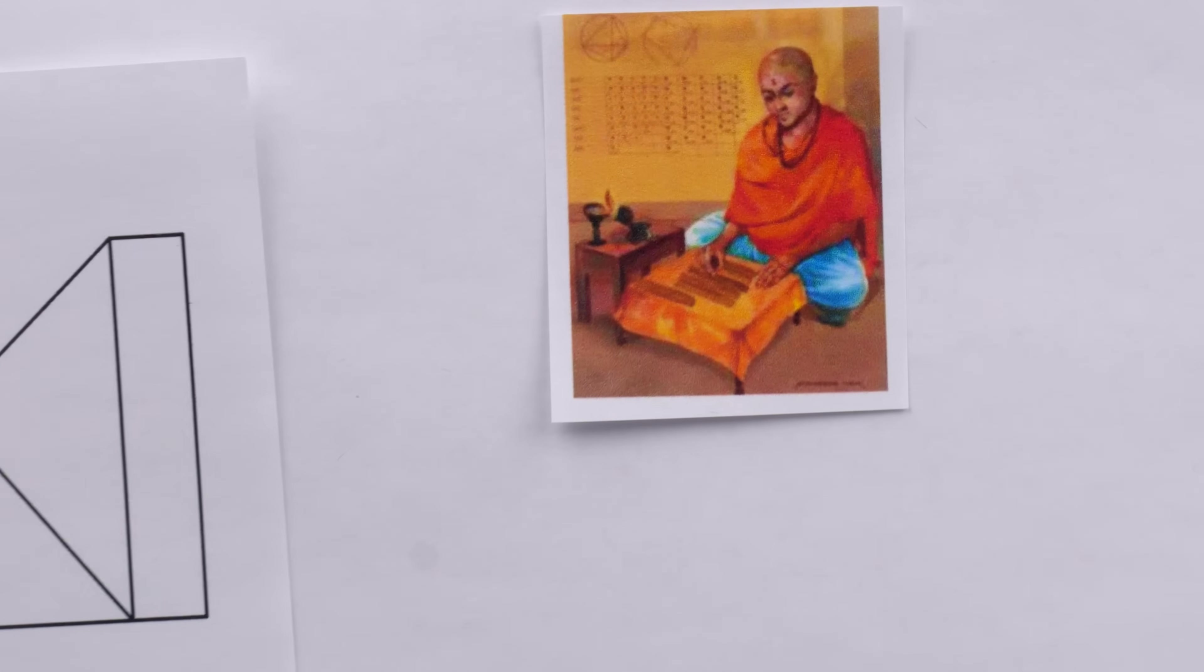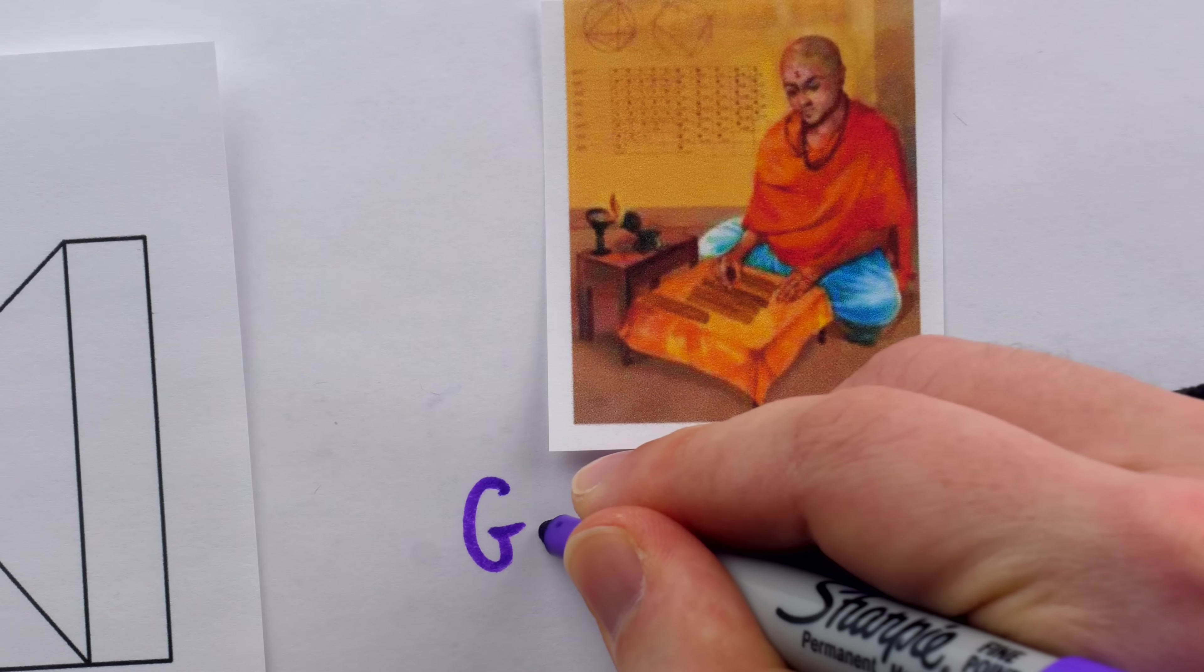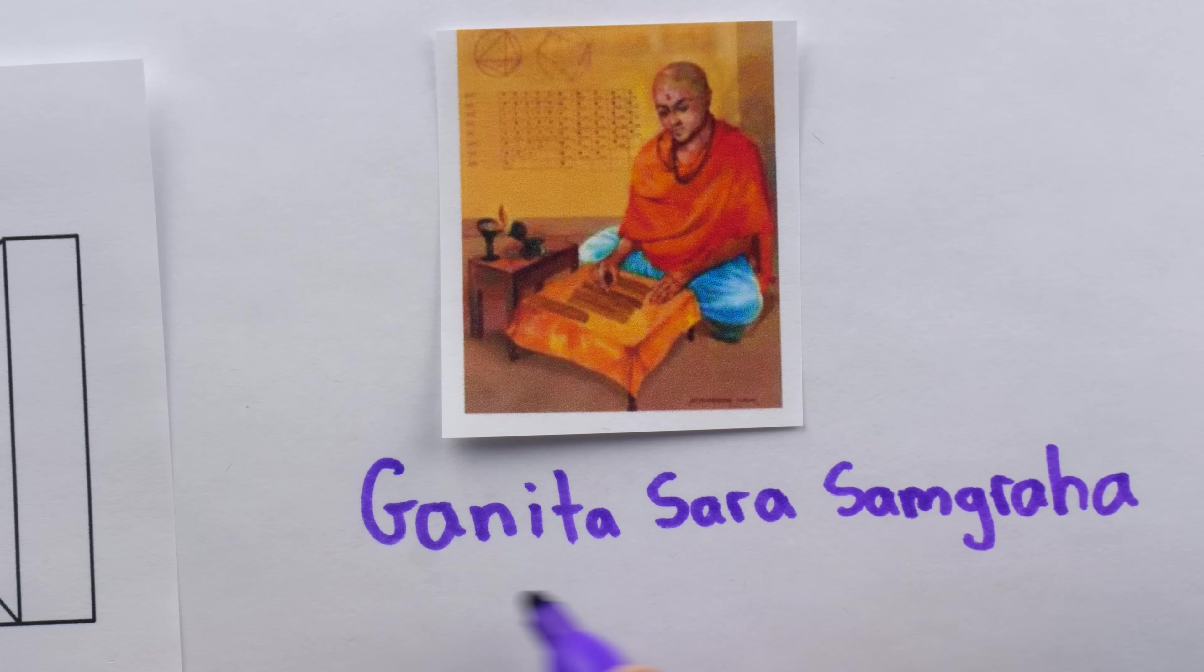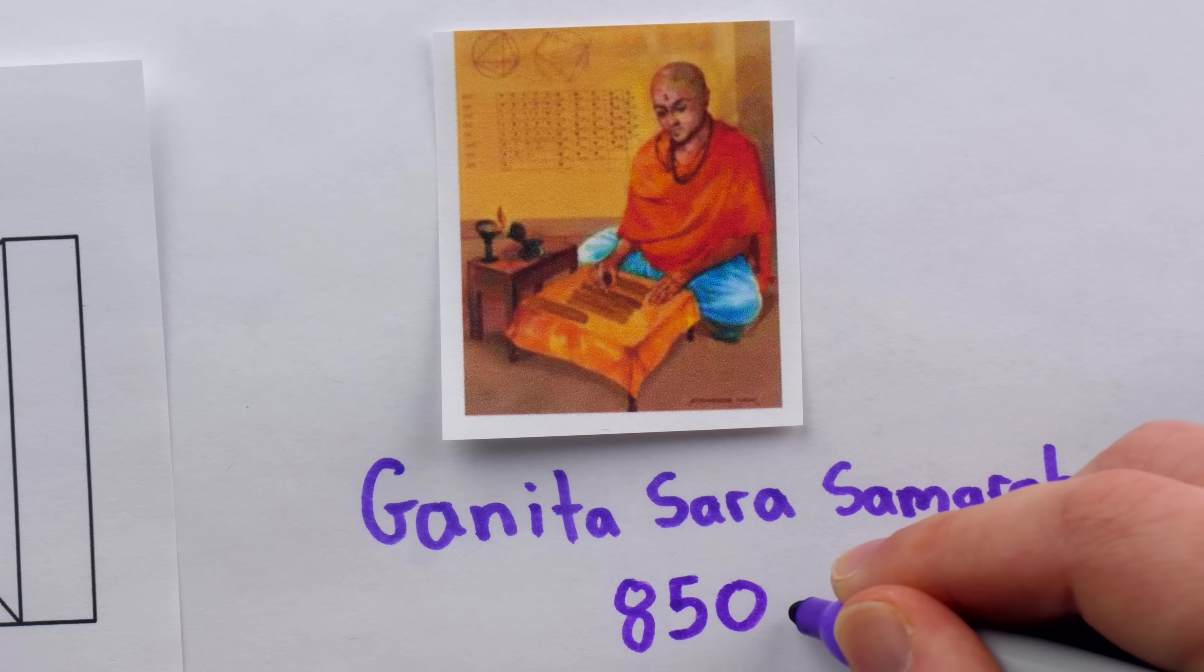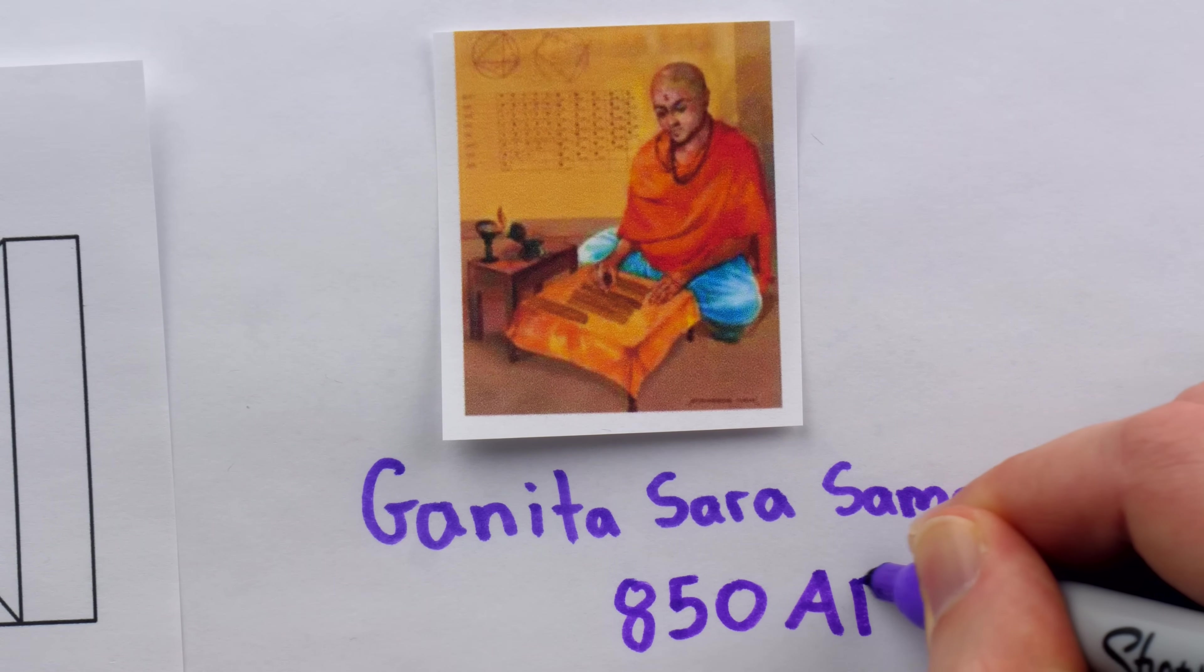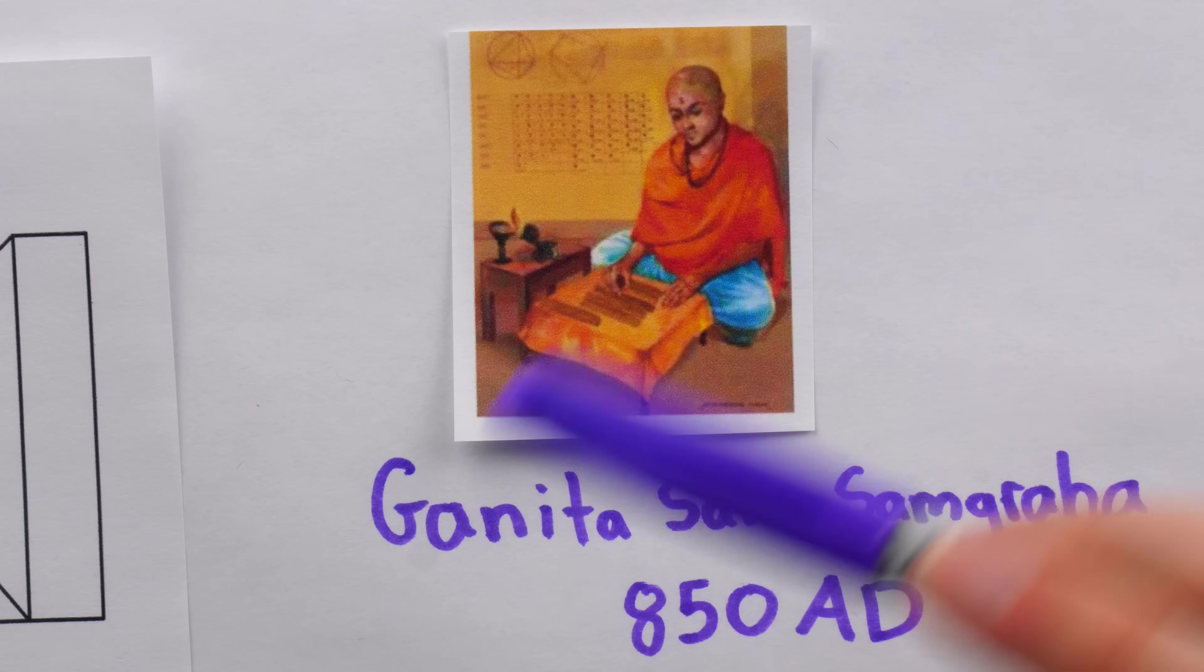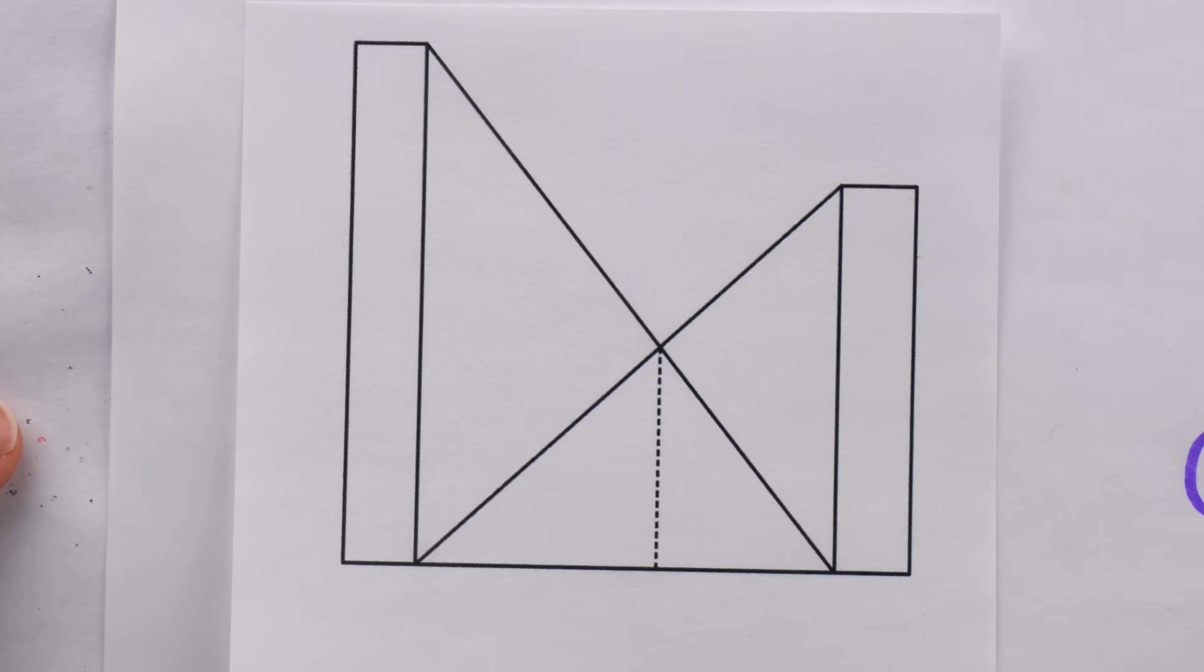This is a portrayal of an Indian mathematician named Mahavira the Teacher, and he's well known for his work titled Ganithsara Samgraha. This work of his is dated to around 850 AD and was actually the first Indian text devoted purely to mathematics. And in this beloved work of Mahavira the Teacher appears the problem we are going to solve today.